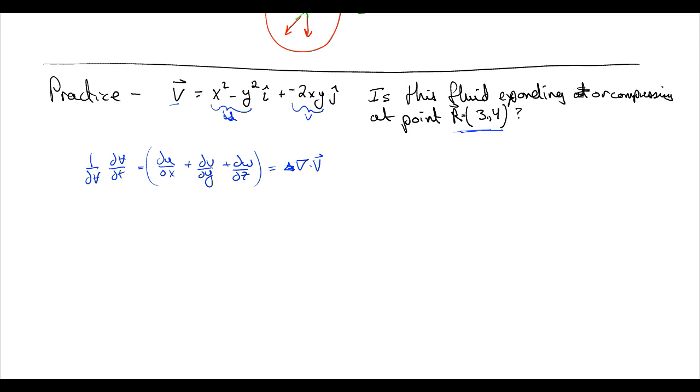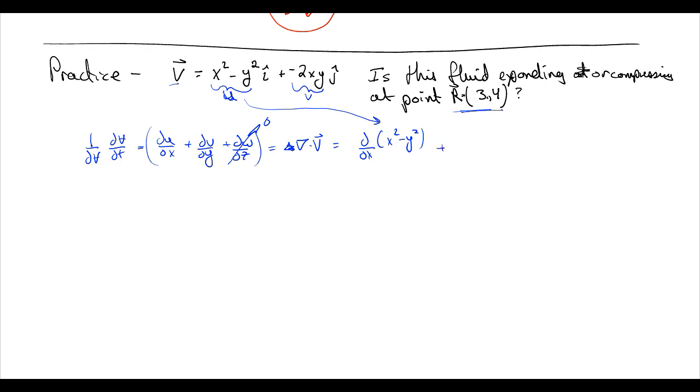But we can start plugging stuff in. We know that this is equal to zero because we have no z component. So this is going to be equal to d/dx of x squared minus y squared. We've just plugged this u in here. And then plus negative 2xy d/dy of that. And that v we're plugging in here. And so this is going to be equal to 2x, because we just have the 2x from here, plus negative 2x. And so it turns out that no matter what x is, no matter what we plug in here, but if we plug in 3, we get 6 minus 6. So that's equal to zero. But no matter where we plug it in, no matter what we plug into x, we get zero. And so our fluid is neither compressing or expanding. So it is an incompressible fluid.